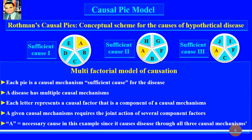The Causal Pie Model, or Rothman's Causal Pies, was invented by Rothman in 1976, and is a conceptual scheme for the causes of hypothetical disease. This is a multifactorial model of causation, where each pie is a causal mechanism — a sufficient cause for the disease. Every disease has multiple causal mechanisms to occur.